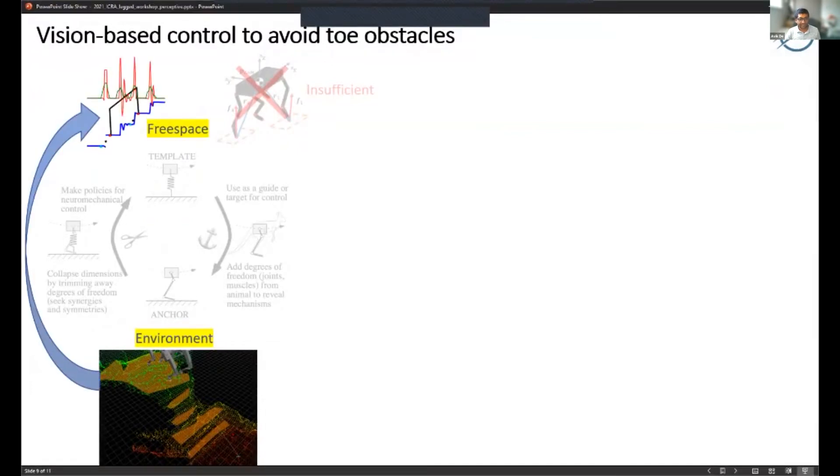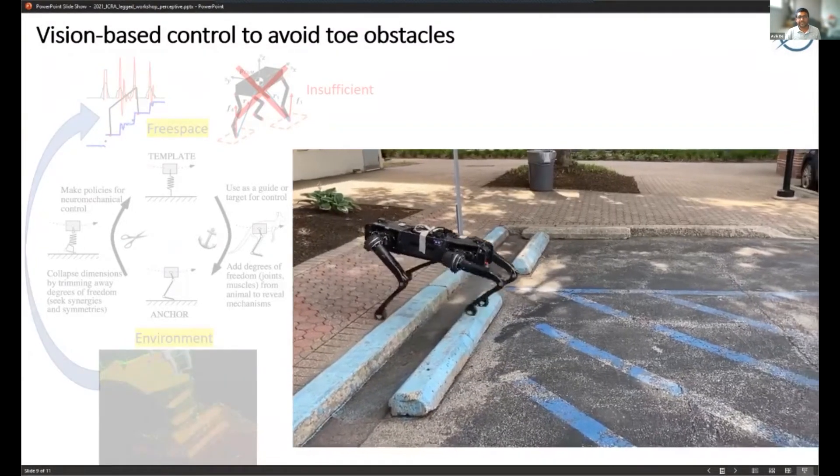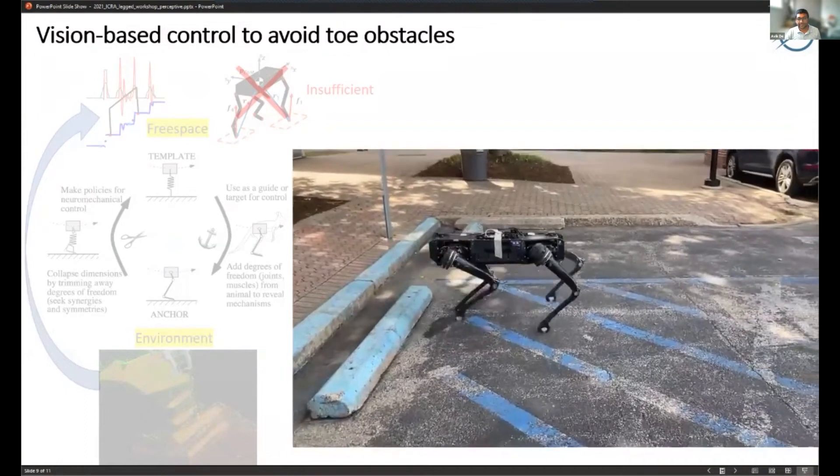What we need to do is not just think about how the complicated anchor model maps to the template, but also what the environment becomes when subject to that same reduction, same projection of the configuration of the robot.